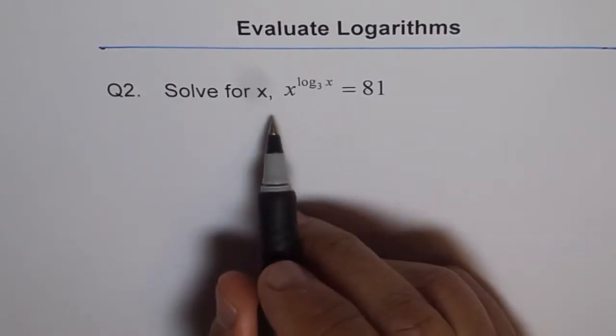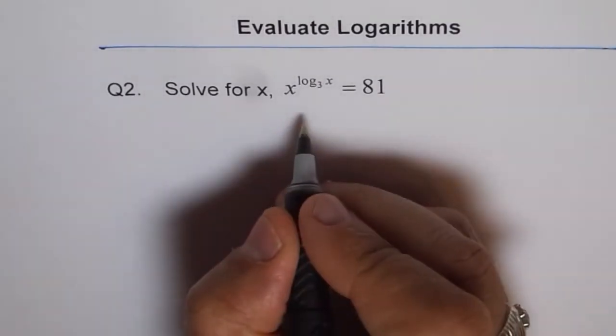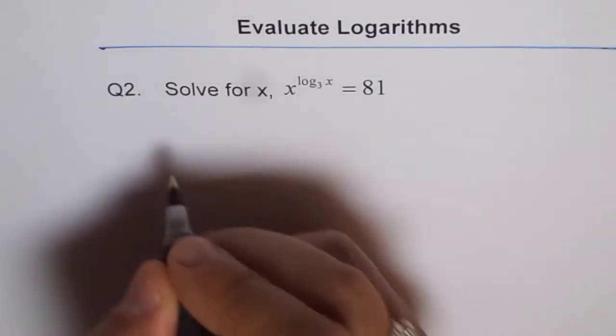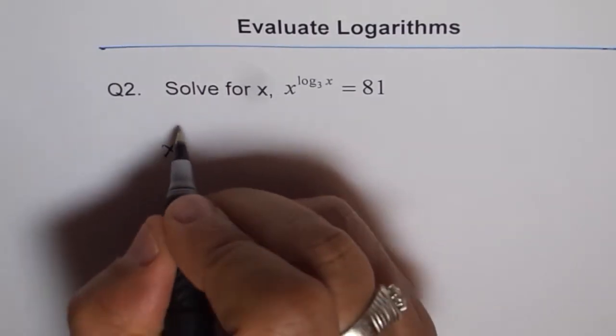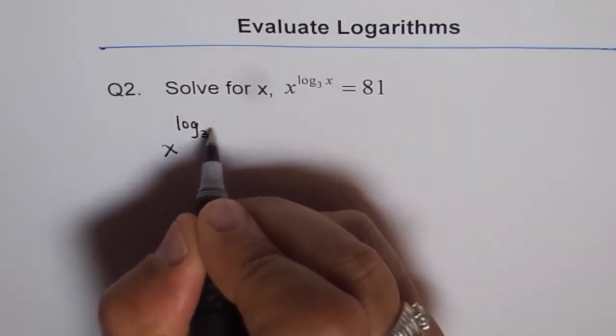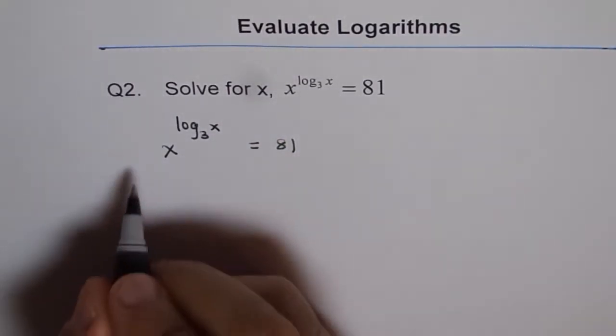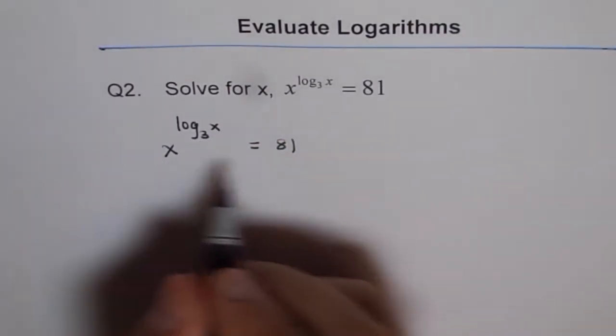We are going to take log both sides to solve it. That doesn't seem to be a likely solution, but it is. So, what we have here is log of x to the power of log base 3 of x equals to 81. So as I said, we will take log to the base 3 on both the sides.